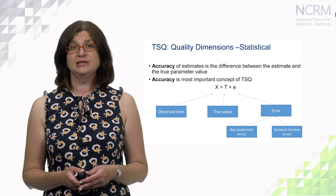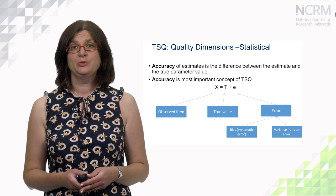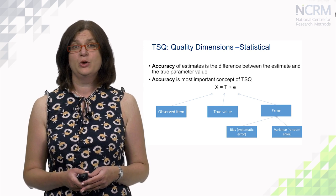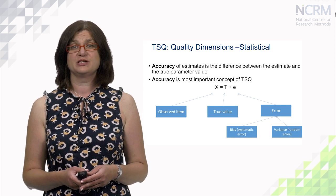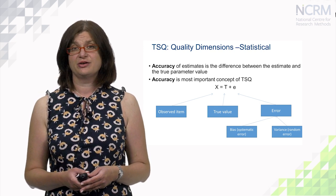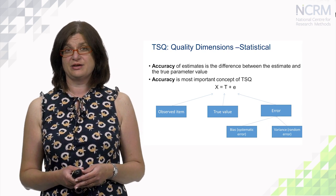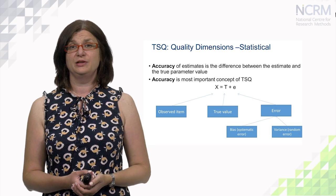Here is a very simple example of what accuracy means. We have a simple equation where x is our observed item, t is our true value, and e is an error. Errors can be systematic errors and random errors. For example, respondents were asked: how many times did you visit a GP during the last month? And one respondent replied that he visited the GP three times.